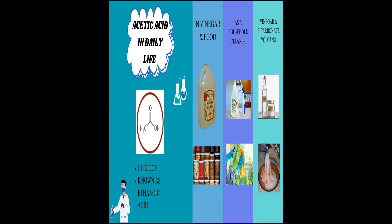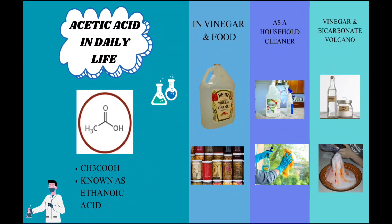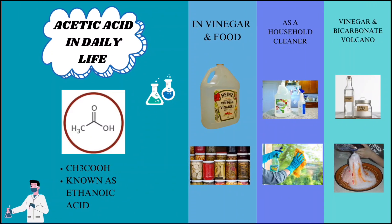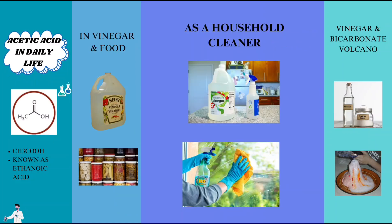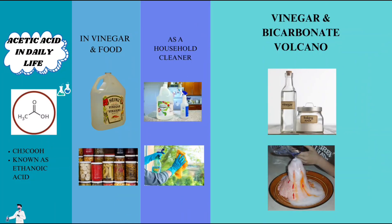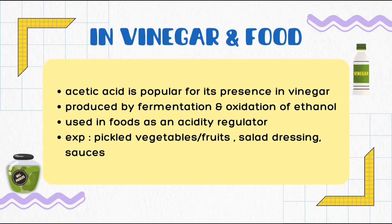Without realizing it, we also use acetic acid in daily life. For example, acetic acid is present in vinegar and food, as a household cleaner, and used in vinegar and bicarbonate volcanoes. Acetic acid is popular for its presence in vinegar. It is produced by fermentation and oxidation of ethanol. It is also used in food as an acidity regulator. Examples of food are pickled vegetables or fruit, salad dressing, and sauces.